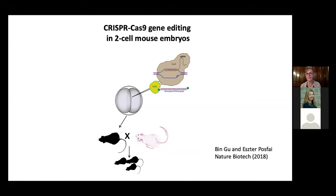Even so, introducing CRISPR components into a zygote to get tagged genes and complex alterations is not terribly easy — until Bin Gu and Esther Pozzi, postdocs in my lab, had a brainwave. Instead of introducing all components into the zygote, they introduced the CRISPR components — the guide RNA and the enzyme — into the two-cell stage, giving a much better chance of getting homologous recombination needed to develop fluorescent-tagged genes. At the two-cell stage there's a very long G2, when homologous recombination can occur. This really worked: efficiencies of 50-100%, generating multiple different lines in one experiment. In six months they generated 20 lines.